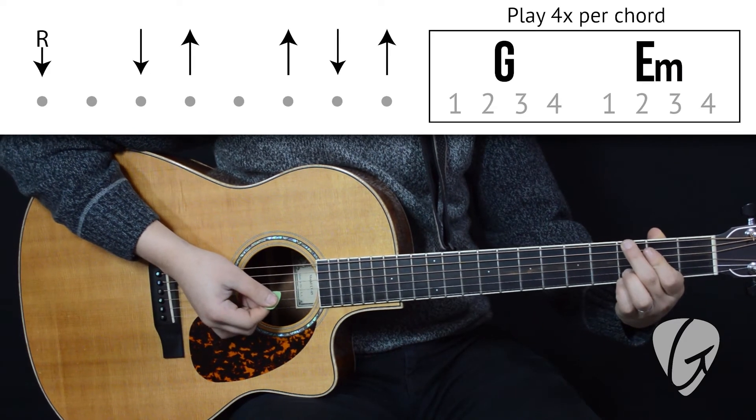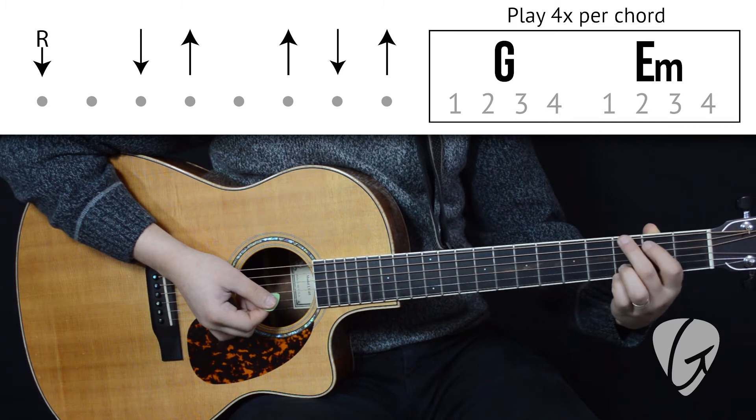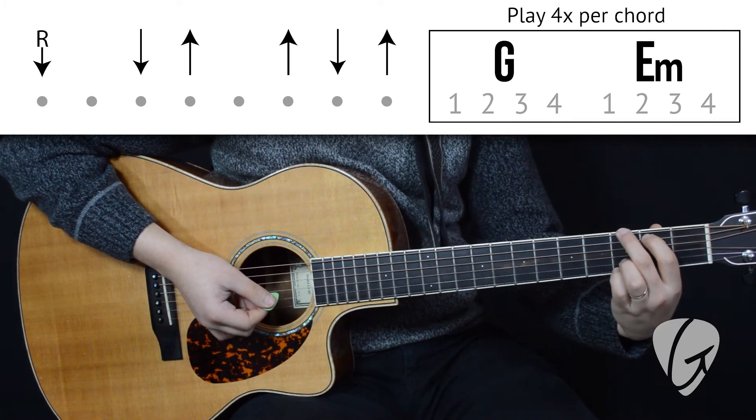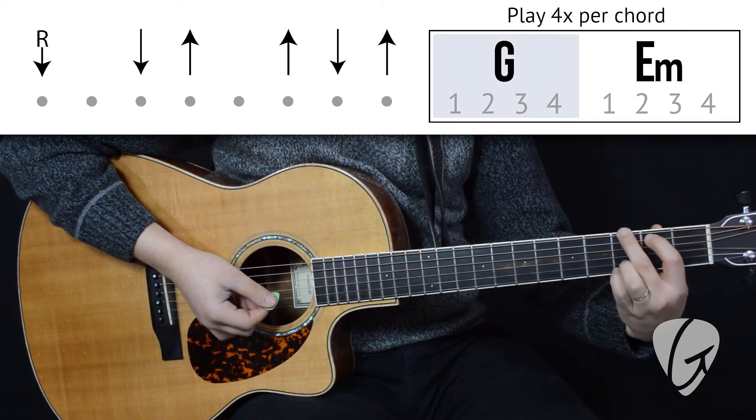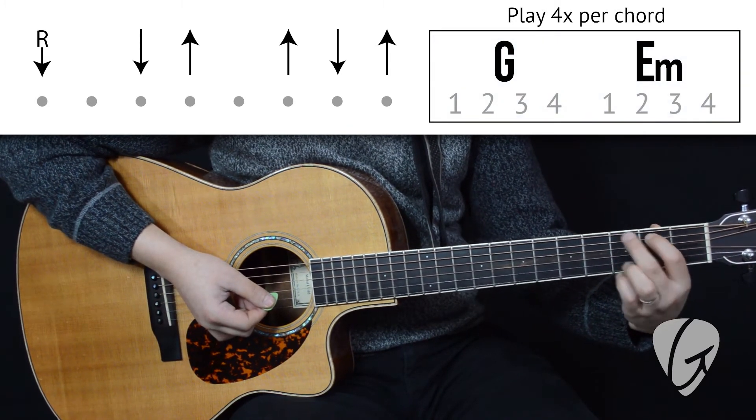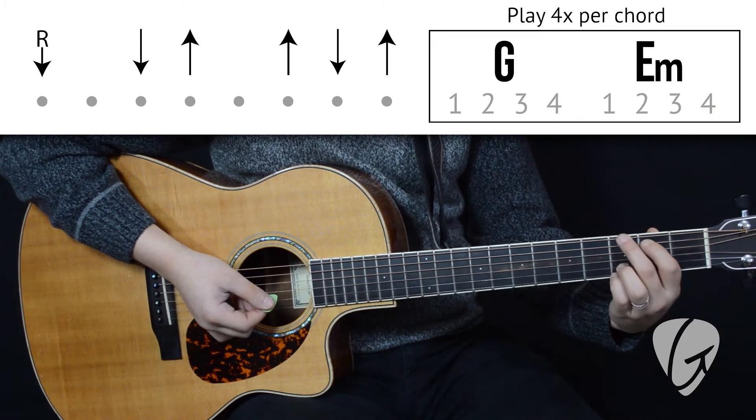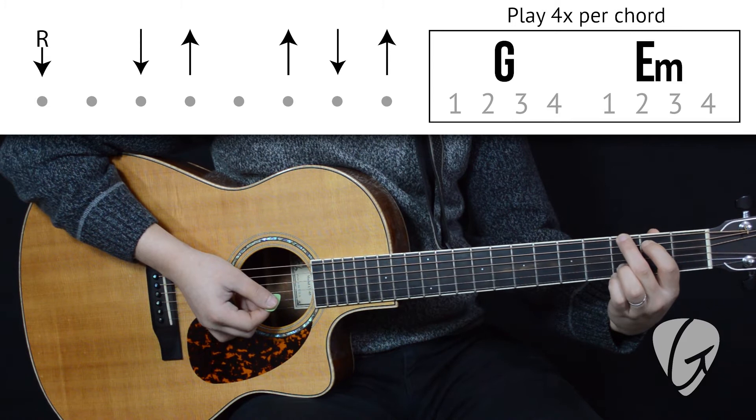Nice. This next exercise is almost the exact same as the one we just did, except we're going to switch chords once to an E minor chord. So we'll play this strumming pattern four times on a G and then four times on E minor. We actually have a video you can practice along to that focuses on switching between just these two chords. There's a link for that down below in the description.